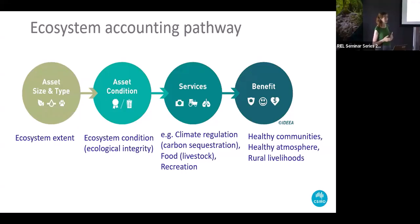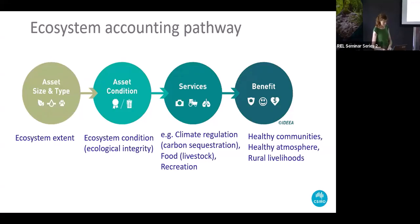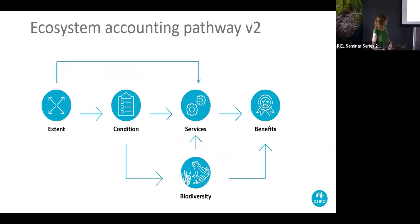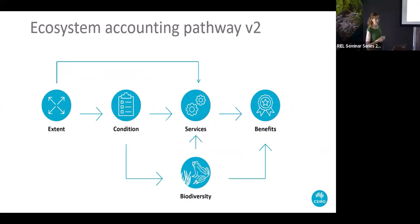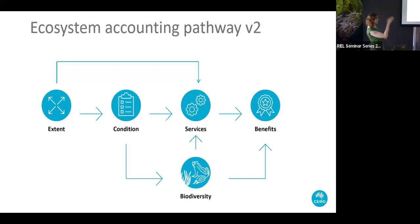Services might include climate regulation — describing carbon sequestration and storage — food provisioning services, and recreation services. Benefits might include healthy communities, a healthy atmosphere, and rural livelihoods. These can be valued using monetary and non-monetary techniques. There's not a linear relationship between all those components — information used to describe ecosystem extent can also feed into ecosystem services calculations or condition calculations, and there's also a biodiversity account that sits outside the main flow but was explored in this project.